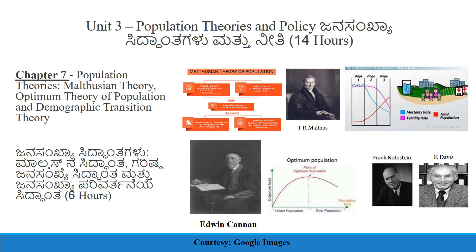The key theorists covered are: Malthus on population (Garhasankya), Edwin Kenan on Optimum population (Garihtra Jannasankya), and Frank Nostran K. Davies on Demographic Transition.